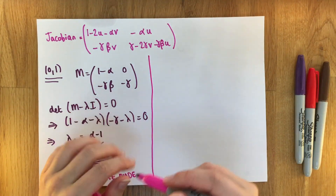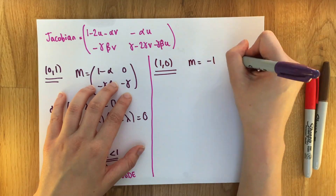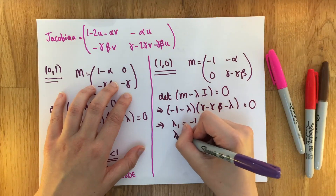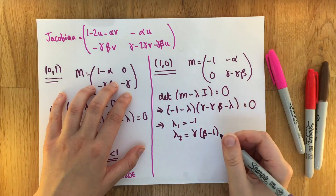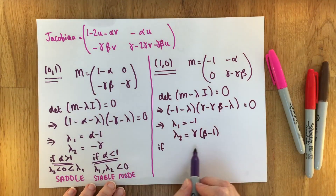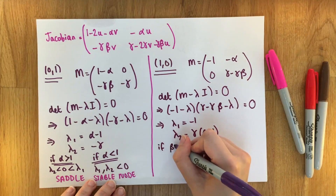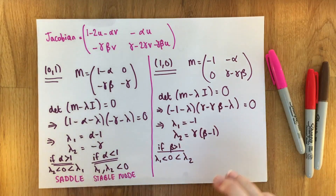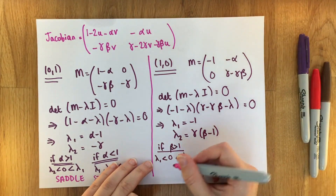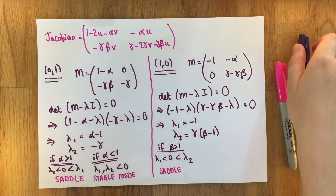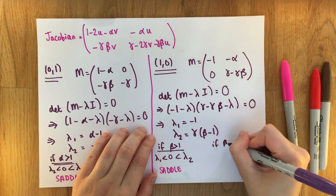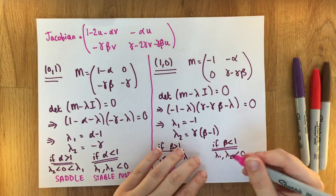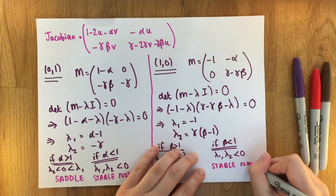Now for the steady state (1,0): the calculations are very similar. We get lambda₁ = minus 1 and lambda₂ = gamma times (beta minus 1). If beta > 1, lambda₁ < 0 and lambda₂ > 0 — a saddle point, which is unstable. If beta < 1, lambda₁ < 0 and lambda₂ < 0 — two negative real eigenvalues giving a stable node.